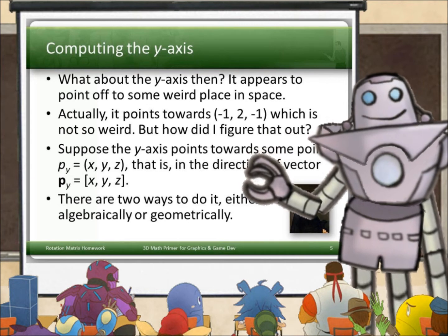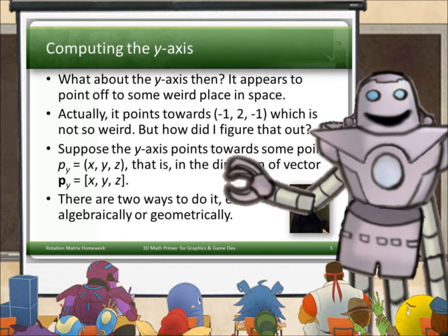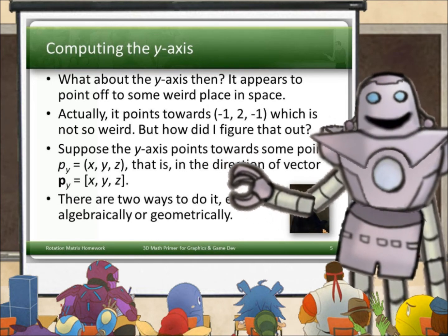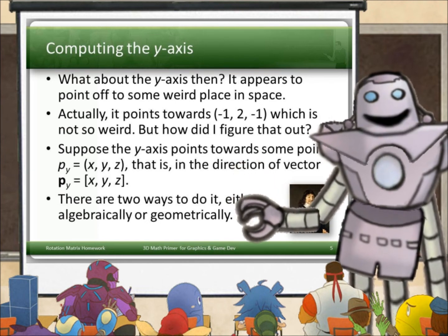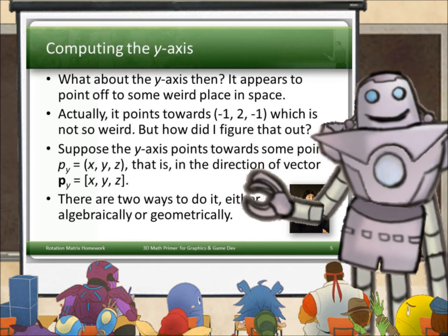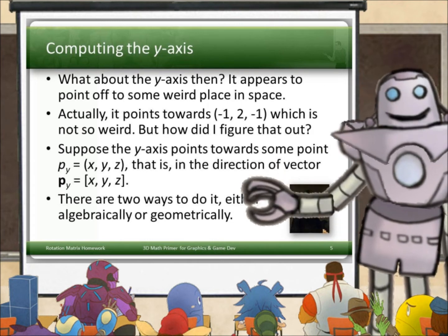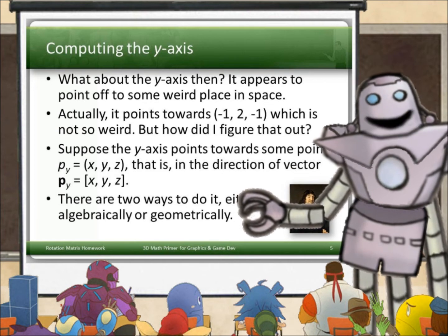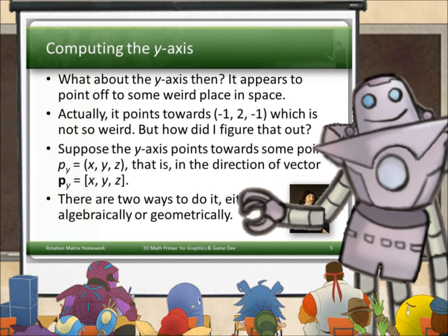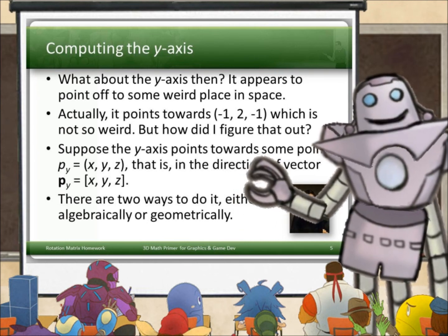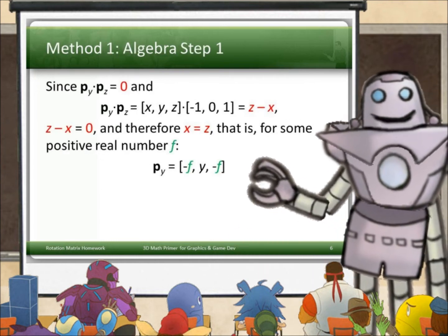Okay. Let's suppose the y-axis points towards some point p_y equals (x, y, z). That is in the direction of vector p_y equals (x, y, z). Okay. Let's solve for x, y, and z. Now there are two ways to do this, either algebraically or geometrically. Now remember this Descartes guy, the, I think, the 4 AM guy. He figured out that algebra and geometry were really the same thing. But some people think better in algebra than they do in geometry. And some others think better in geometry than they do in algebra. So I'm going to show you both ways, just in case.